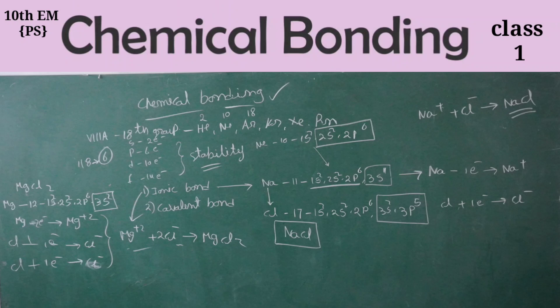For this reason, all other elements also try to achieve stability. In trying to do so, one element bonds with another element, one atom bonds with another atom — and this bonding is called chemical bonding.